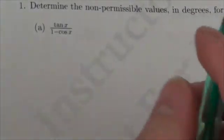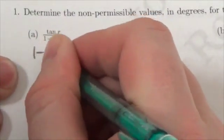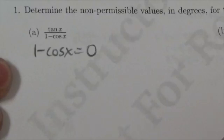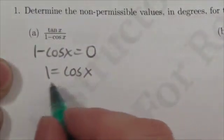Non-permissibles comes primarily from the denominator, and we cannot allow the denominator to go to zero. So in this case here, I cannot allow the expression one minus cosine of x to equal zero, which means I cannot allow the cosine of x to equal one.